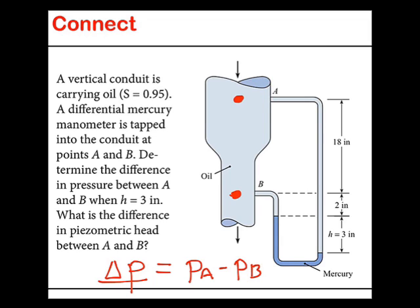To measure differential pressure, we drill two holes, two pressure taps, and put on an instrument capable of measuring differential pressure. And this is a differential manometer in this example.